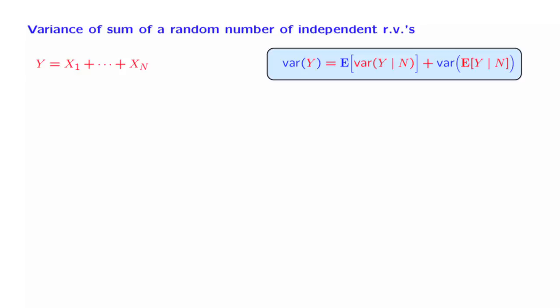The way to proceed will be to use the law of total variance, which effectively breaks down the problem by conditioning on the value of the random variable capital N. So let us start.